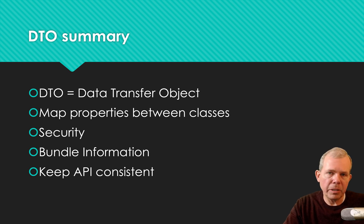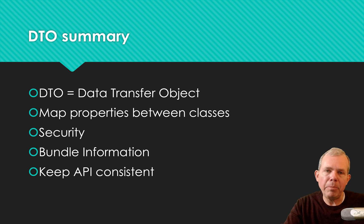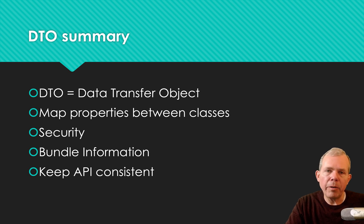Here's a summary of why you would want to use a DTO. First, remember what it's called: a data transfer object. When you make one, you need a process of mapping between the two classes — either create your own function or use an automapper. The reasons to use one are: security purposes, bundling information from multiple classes, providing enhanced information, and keeping your API consistent so consumers are not annoyed when you make an update.